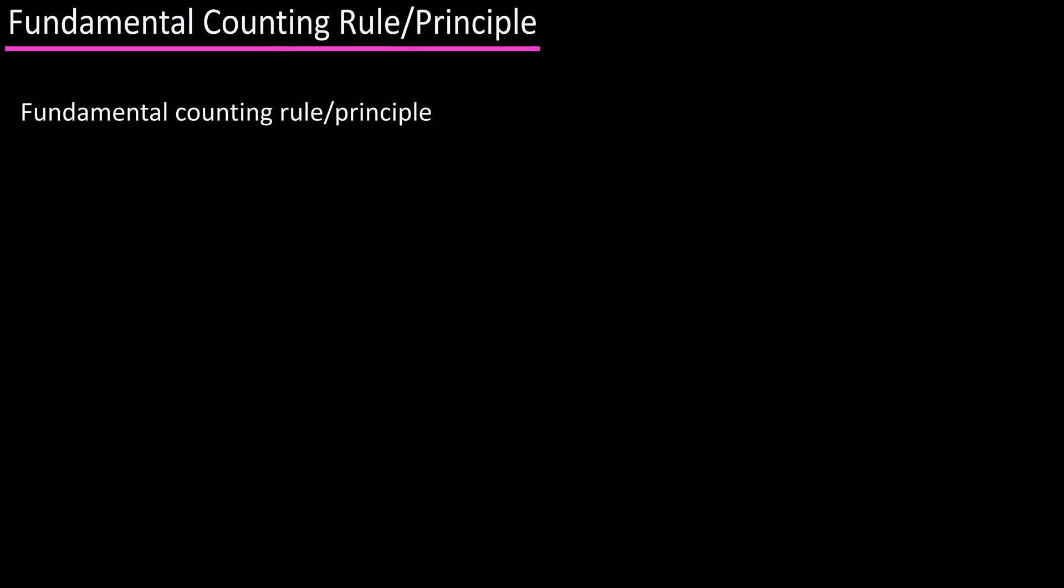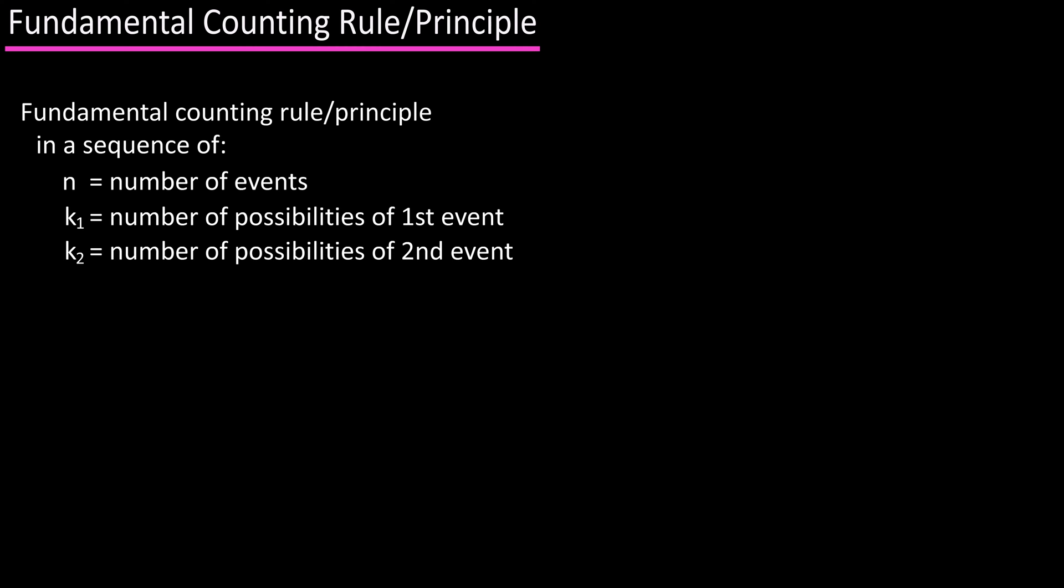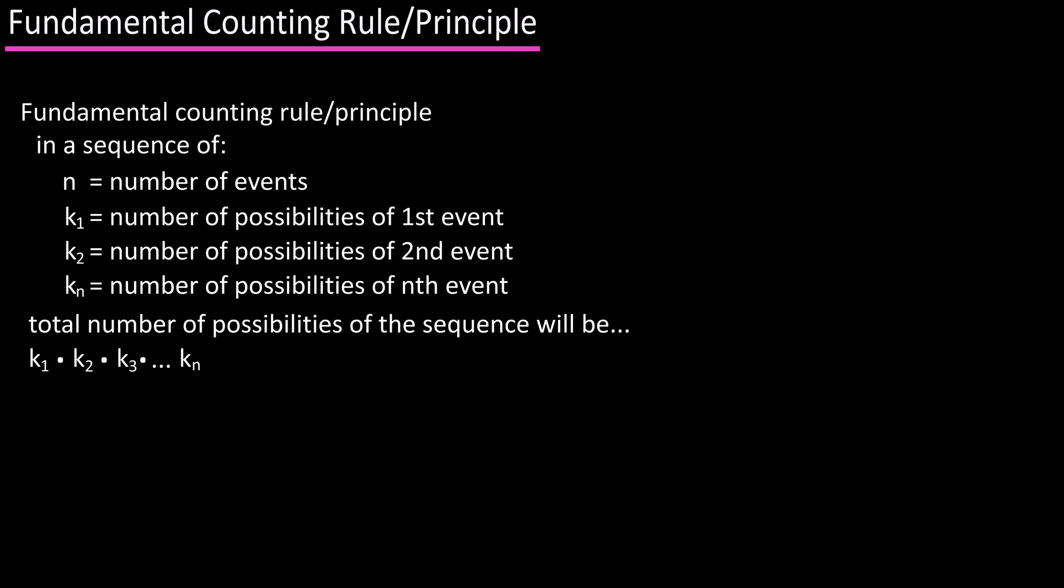To answer this question, we can use the fundamental counting rule or principle, which mathematically says: in a sequence of n number of events, where the first event has k₁ number of possibilities, and the second event has k₂ number of possibilities, and so on, the total number of possibilities of the sequence will be k₁ × k₂ × k₃ × ... × kₙ.